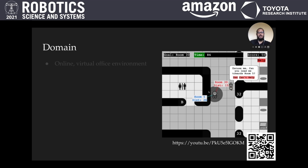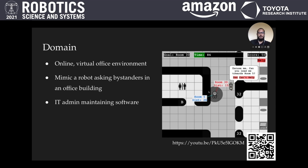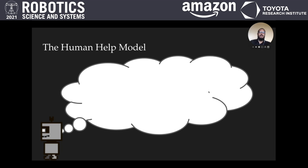Our domain is an online virtual office environment, where interactions are designed to mimic a robot asking bystanders in an office building for help. The user is told that they control an IT administrator who's under time pressure to complete their main task of maintaining computer software. A mail delivery robot is also operating in the same office building, and periodically it asks users for help going to its destination. We use this domain to collect data on users' help-giving behaviors, and use that data to train a model.